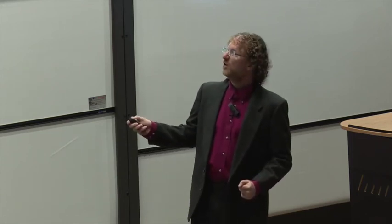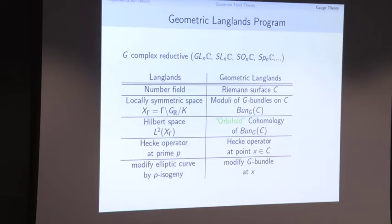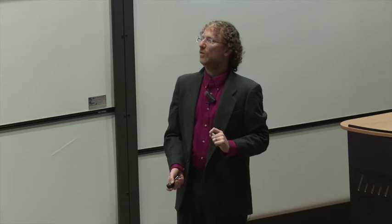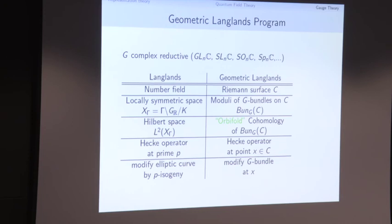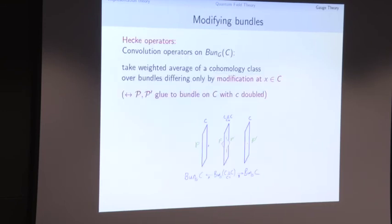Instead of L² functions on a locally symmetric space, we look at some cohomology of this moduli space — some derived cohomology. Before we had Hecke operators associated to primes; the analog of a prime is now a point of the Riemann surface. The Hecke operators here take a bundle on the surface and modify it at a single point.